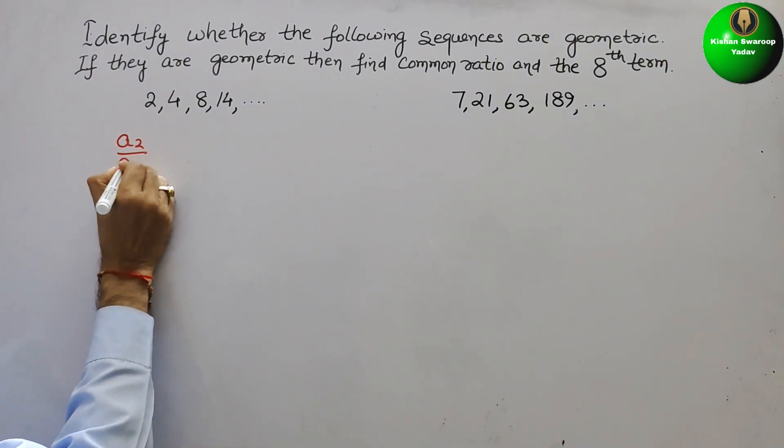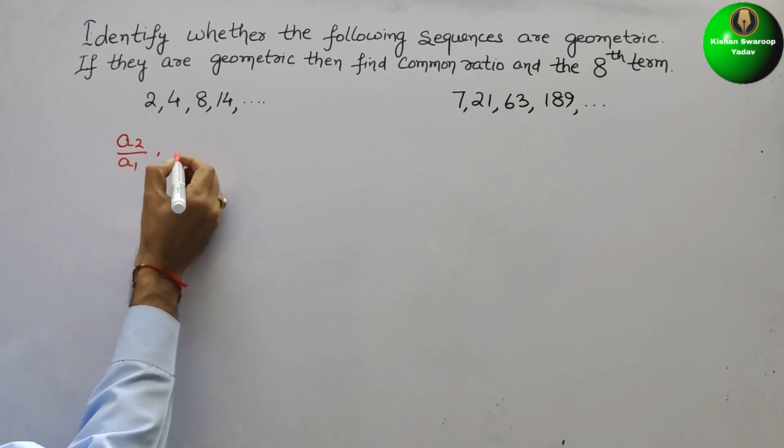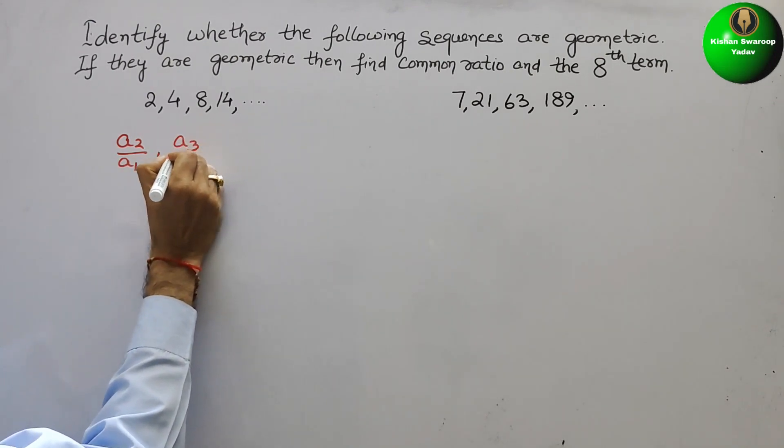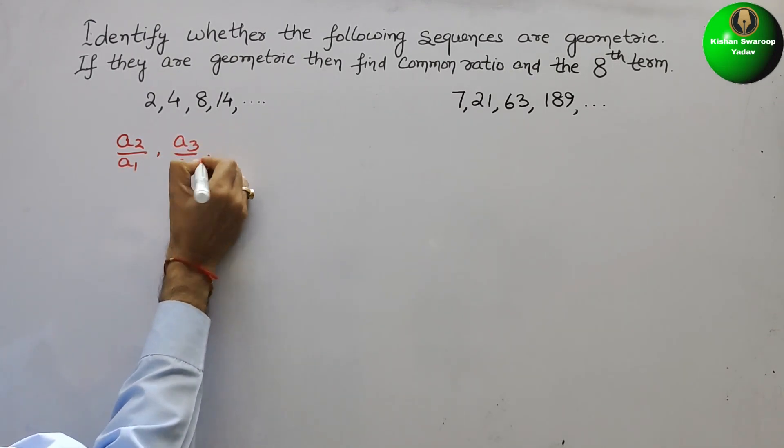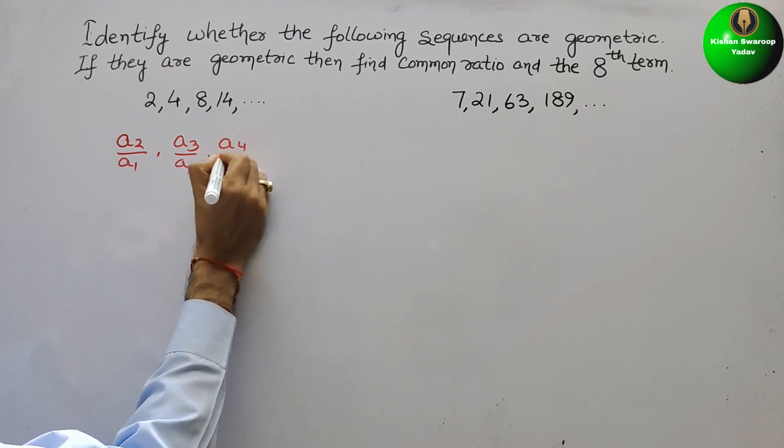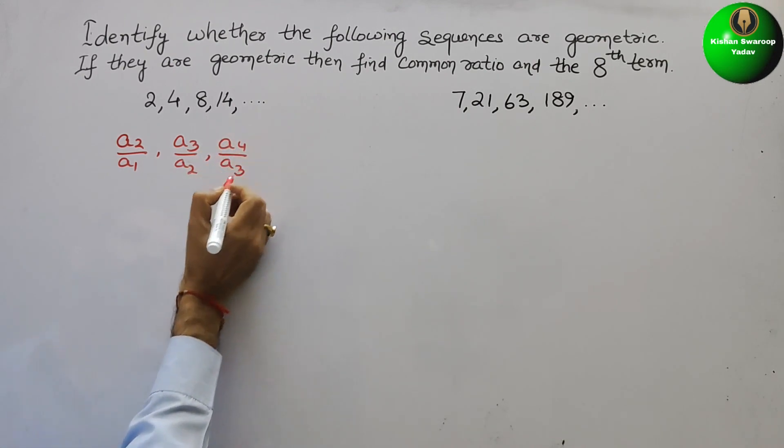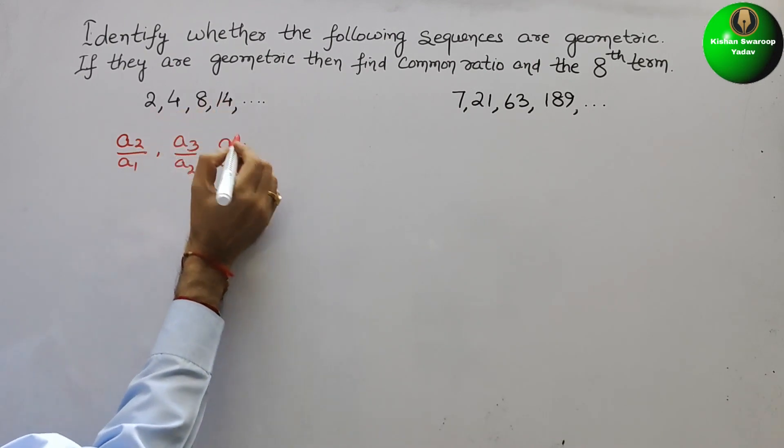The ratios will be what? A2 by A1. Next, A3 by A2. Next, A4 by A3. So there are 1, 2, 3 and 4.